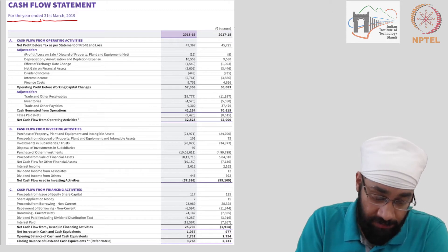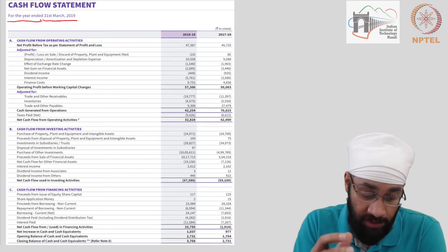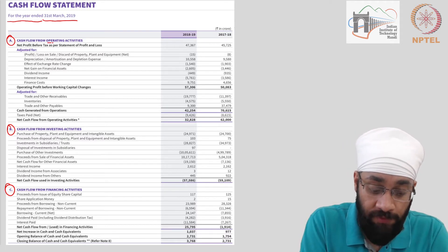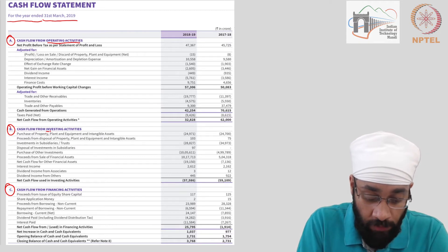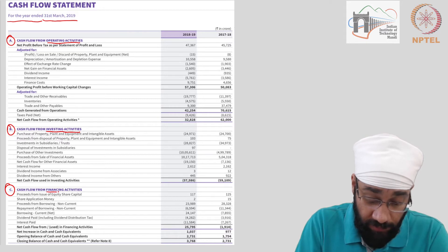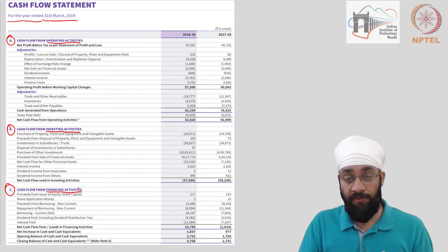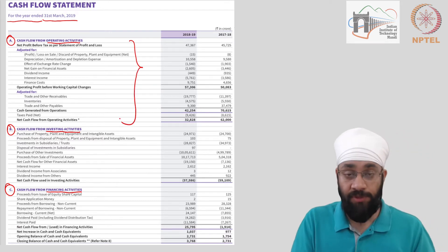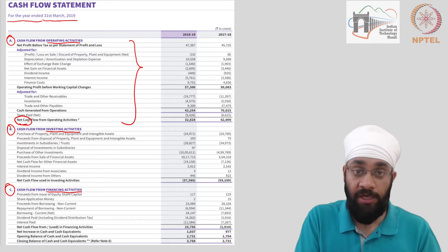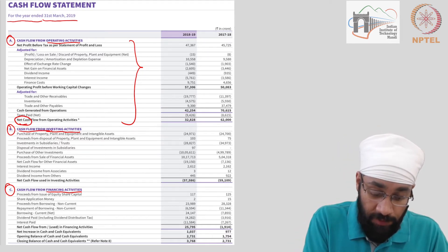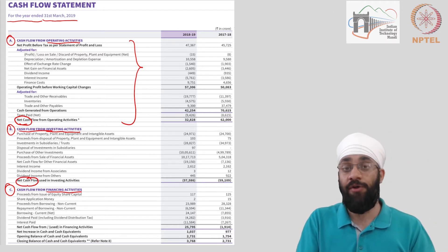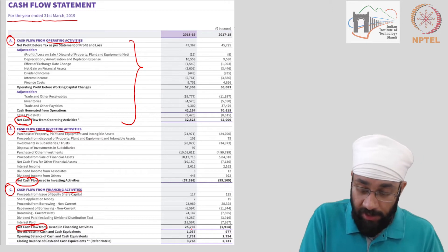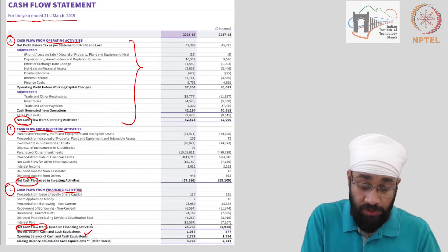There are three broad heads using which this report is prepared — A, B, and C. First, you have cash flows from operating activities. The second head is cash flows from investing activities, and the third is cash flows from financing activities. We have categorized the transactions into these three, and then we look at the net cash that results from each category — operating, investing, and financing — and finally what happens to the overall cash as a result of all three.